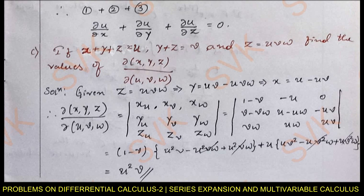If x + y + z = u, y + z = v, and z = uvw, find the Jacobian ∂(x, y, z)/∂(u, v, w). As explained in the previous video, you can refer to that for the detailed solution. The Jacobian value is u²v.